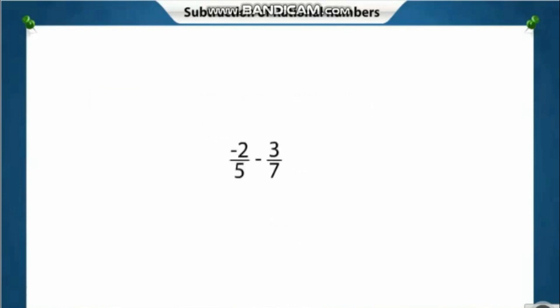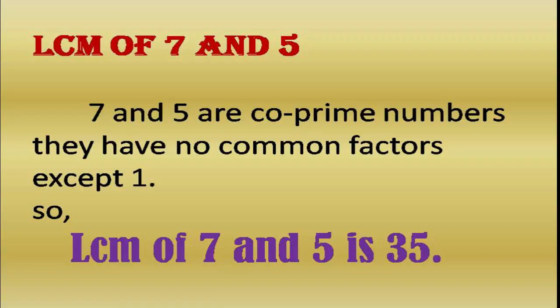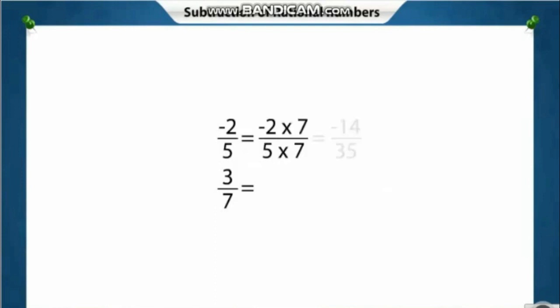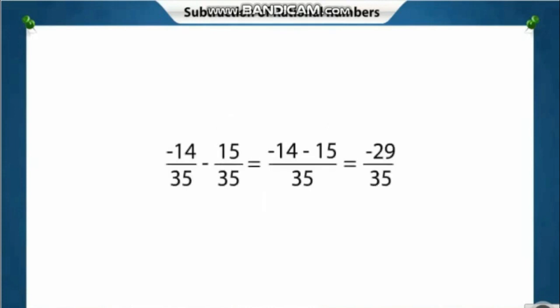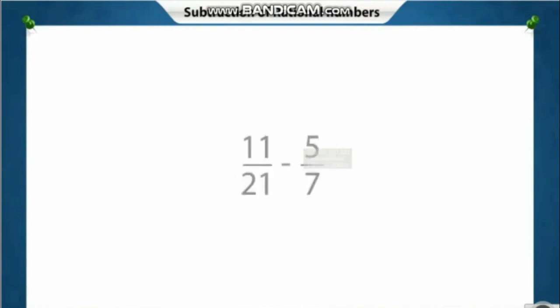Now let's find the difference between two rational numbers with different denominators. First, take the LCM of the denominators. Since 7 and 5 are co-prime numbers with no common factors except 1, the LCM of 7 and 5 is 35. Multiply the numerator and denominator: minus 2 by 5 times 7 gives 14 by 35, and 3 by 7 times 5 gives 15 by 35. Find the difference between the numerators since the denominators are the same. We can also add the additive inverse of the number being subtracted to find the difference between two rational numbers.